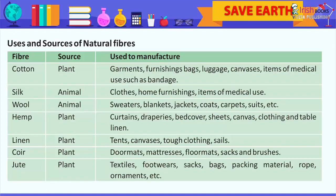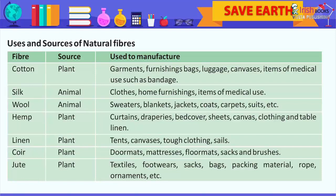Linen — source: plant; used to manufacture: tents, canvases, tough clothing, sails. Coir — source: plant; used to manufacture: doormats, mattresses, floormats, sacks and brushes. Jute — source: plant; used to manufacture: textiles, footwear, sacks, bags, packing material, rope.